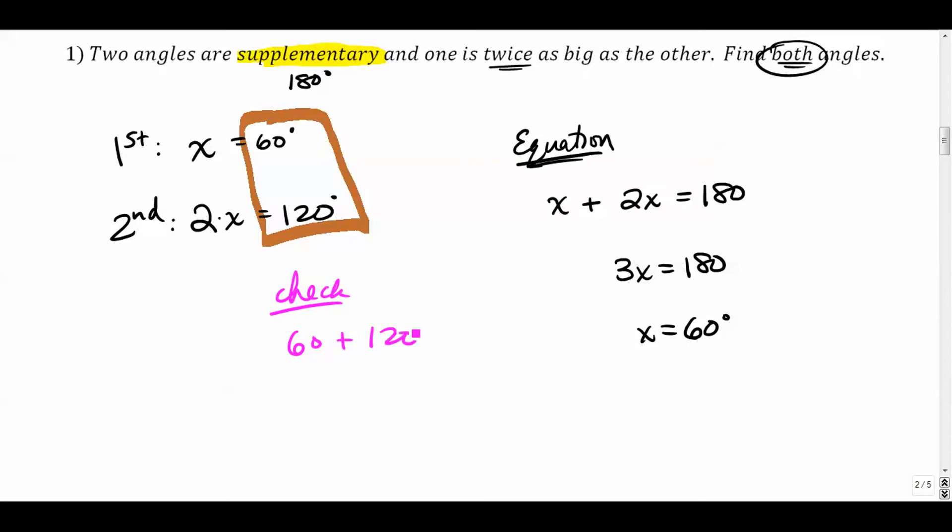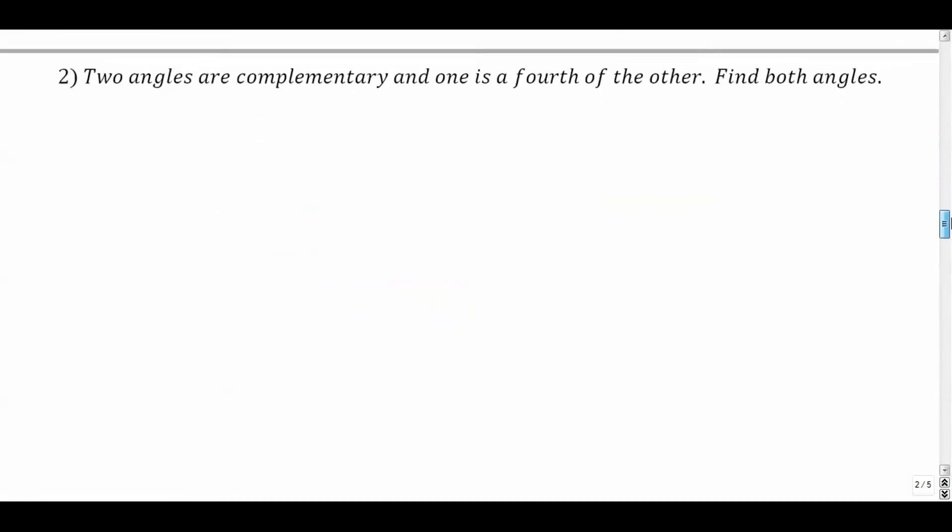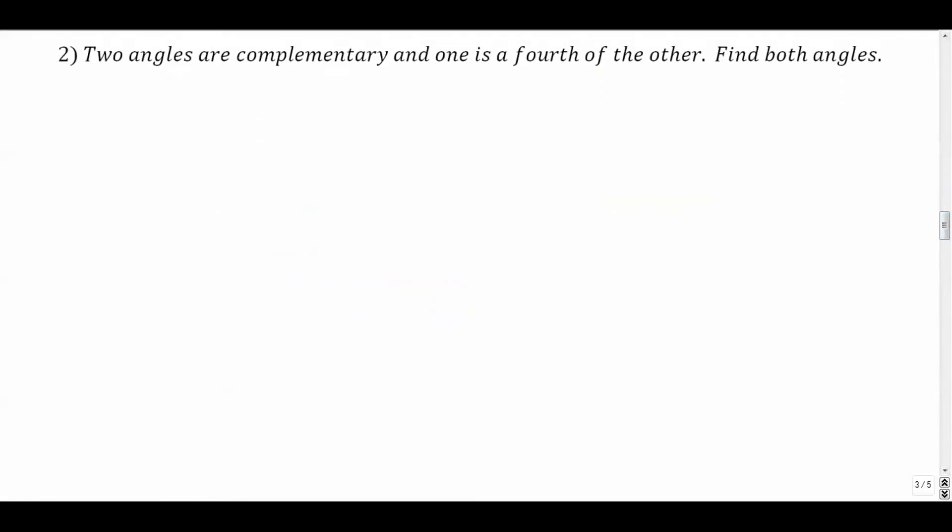Number two: two angles are complementary, I'll highlight that, and one is a fourth of the other. Find both. All right, so we go first angle is x, second angle is a fourth of the first one, one fourth times x.